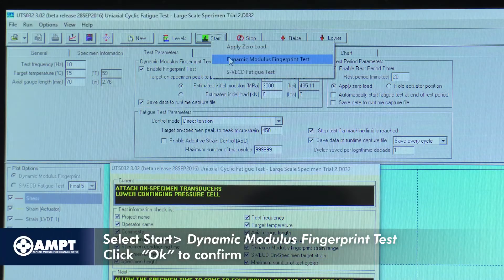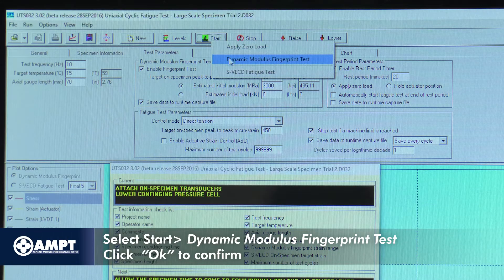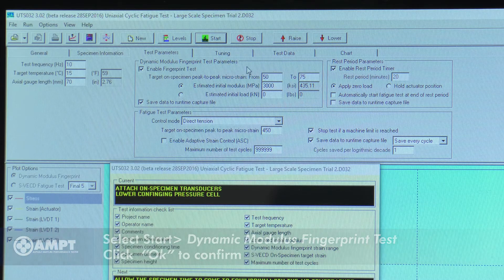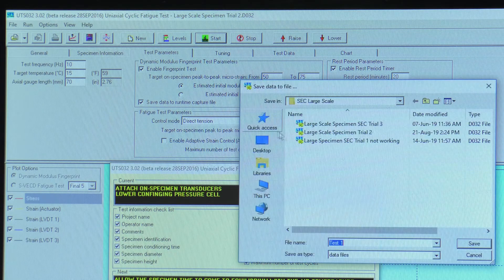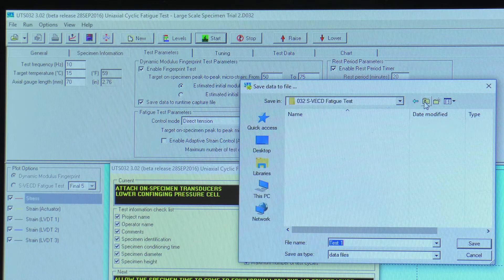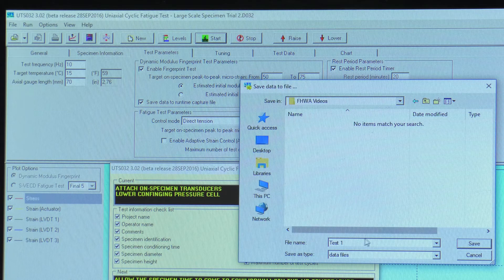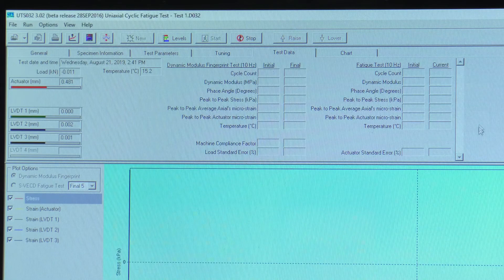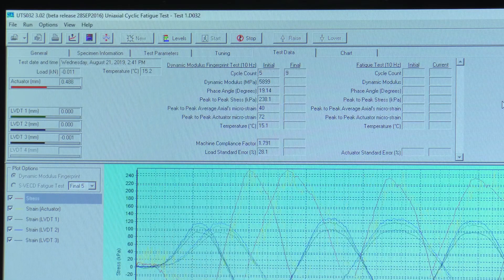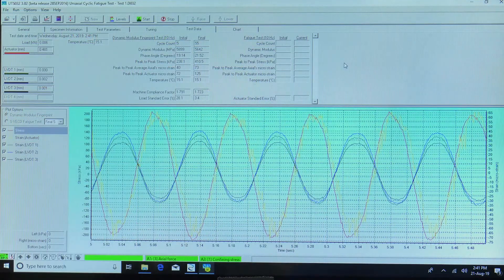Select Start, Dynamic Modulus Fingerprint Test, and then select a location to save the data. The AMPT will calculate the load level necessary to achieve 50 to 75 microstrain using the results of these first few cycles and then apply this load level to 50 cycles.